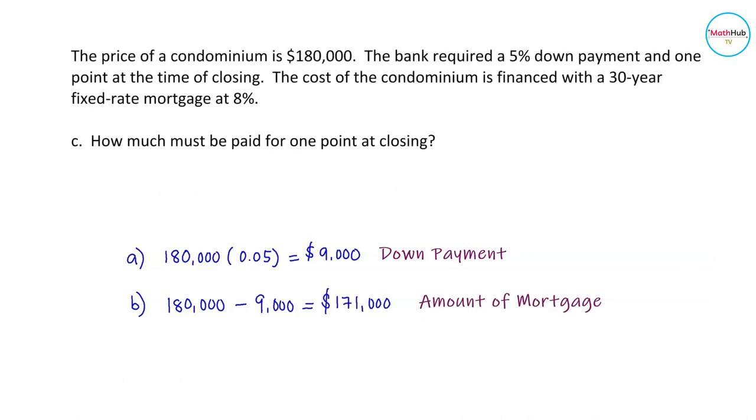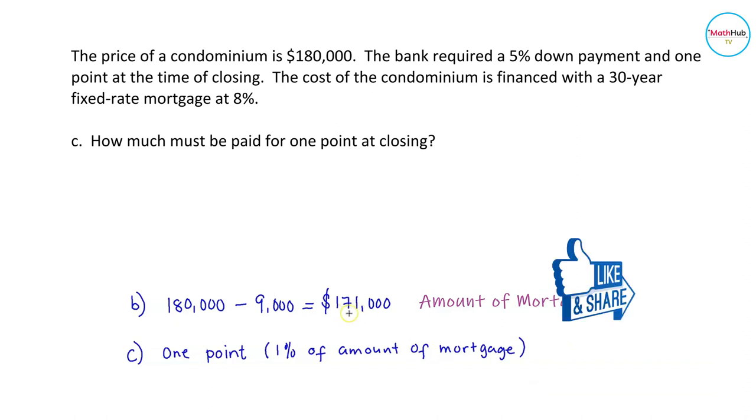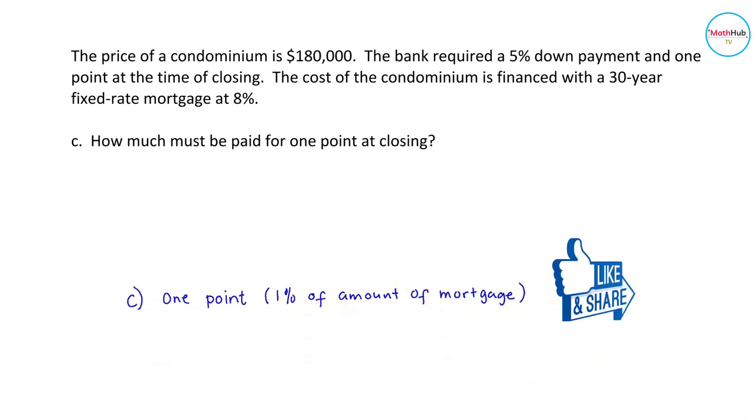Let us compute for the amount that must be paid for the one point at closing. When you say one point, that means 1% of the amount of mortgage. In this case, the amount of mortgage is $171,000. So we have 1% of $171,000.